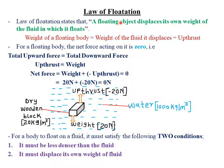The law of flotation states that a floating object displaces its own weight of the fluid in which it floats. So whenever you have an object floating on a fluid, the weight of that object will always be equal to the weight of the fluid displaced. For example, consider a dry wooden block floating on water — its weight must equal the weight of the water it displaces.